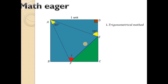Each corner of this square is 90 degrees. Then from triangle ADE, the remaining angle will be 20 degrees. Why? Because the sum of three interior angles of a triangle is 180 degrees. And angle A is also a corner of this square, so this value is also 90 degrees.